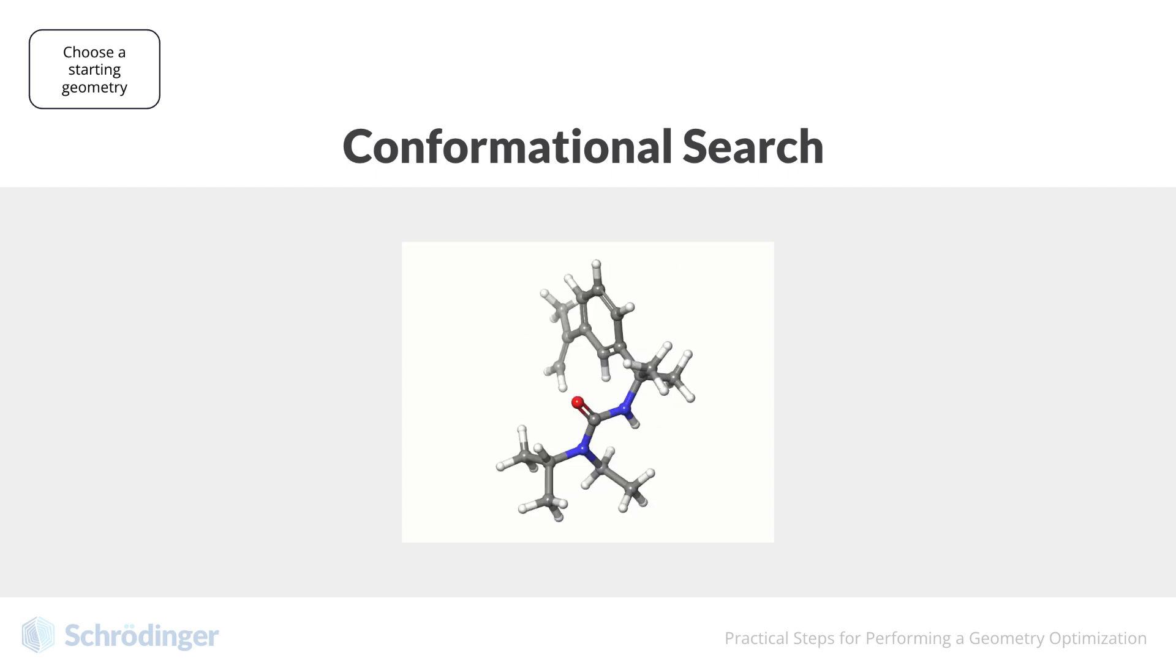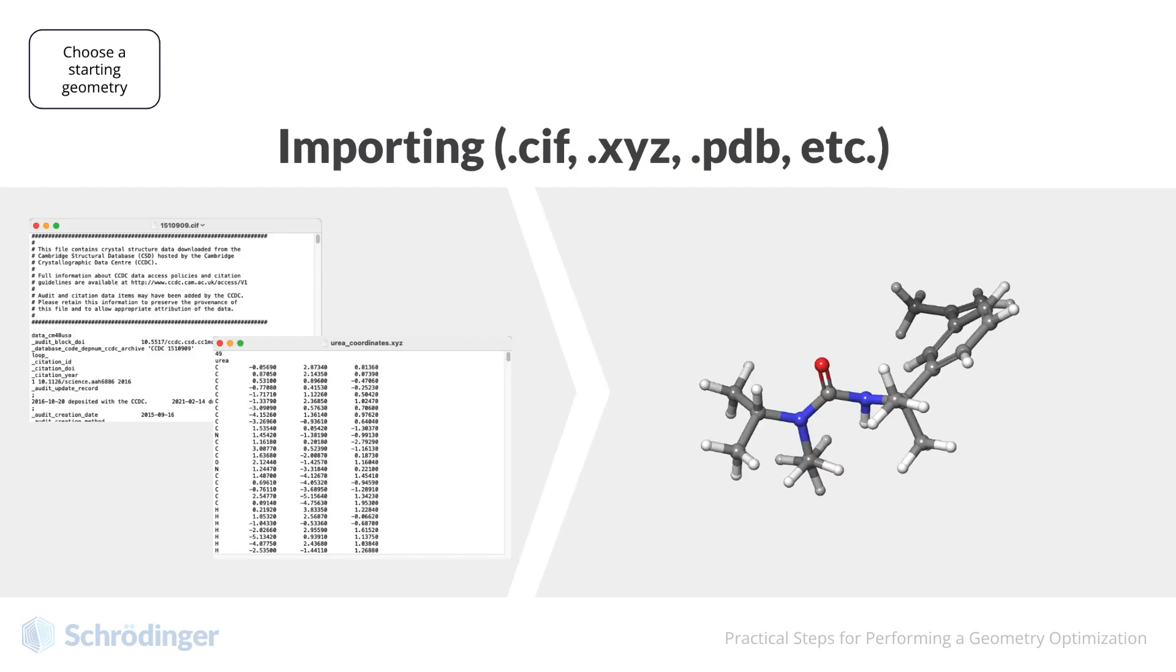Beyond these algorithms, you may already have a 3D structure which can be used as an input for your DFT geometry optimization. For example, a CIF of an experimental x-ray structure, a structure from the PDB, or another structure file from another calculation or coordinate database.